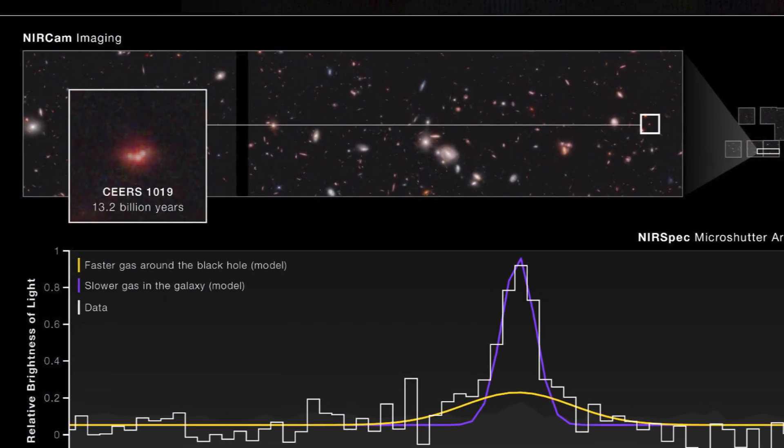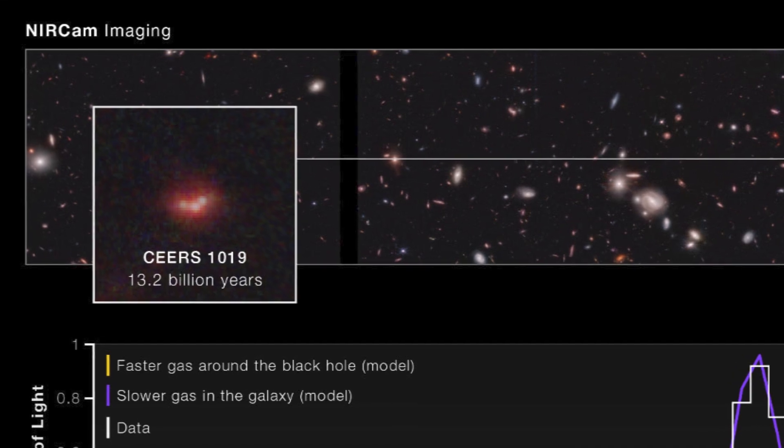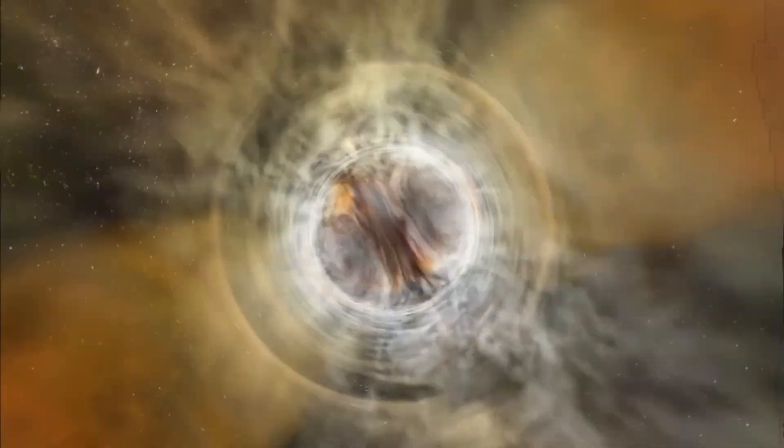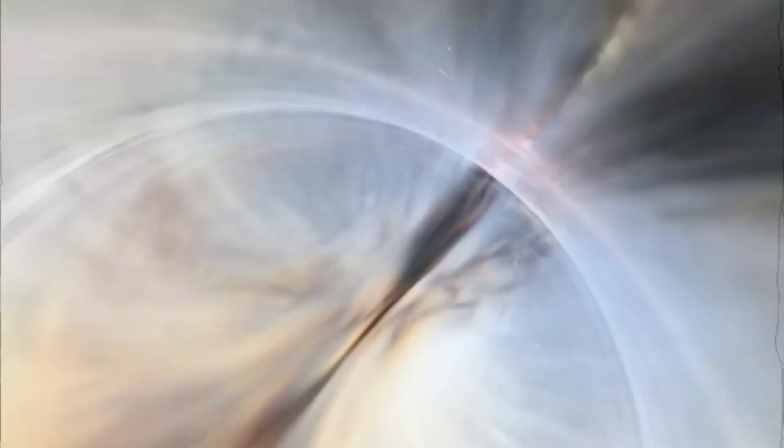The black hole located at the center of CEERS 1019 has a mass of about 9 million times that of our Sun. Although this may sound immensely large, many supermassive black holes can grow to billions of times more massive than our star. However, the existence of black holes of this magnitude in the early universe poses a puzzle for scientists.